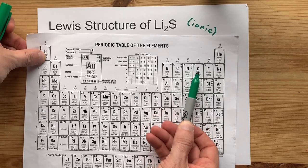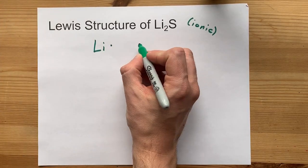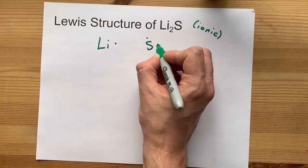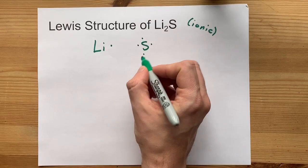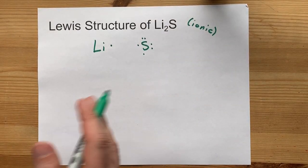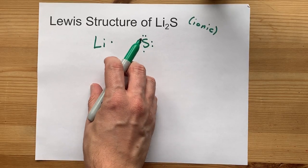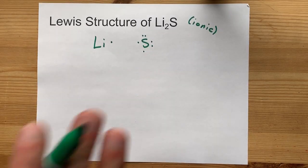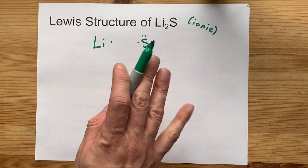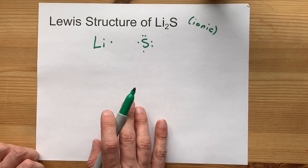Sulfur in group 16 brings six valence electrons with it. One, two, three, four, five, six. I've put north, east, south, and west, spread them out before I doubled them up. That's just so that I have all the unpaireds that I'll actually need in the end.